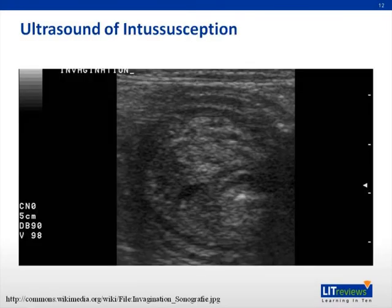This is a classic example of an ultrasonographic image of intussusception, with multiple layers of superimposed bowel loops visible.